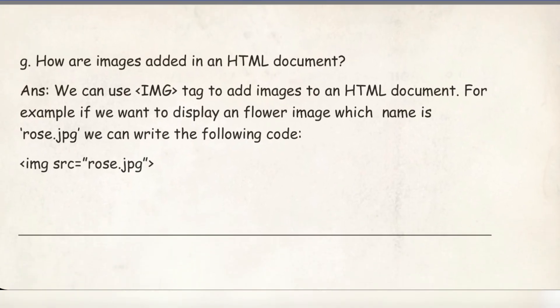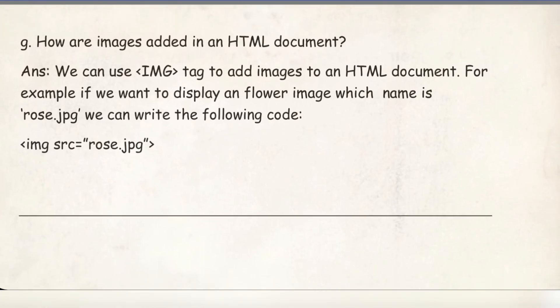Number G: How are images added in an HTML document? We use the img tag to add images in an HTML document. For example, if we want to display a flower image whose name is rose.jpg, we can write: img src="rose.jpg".